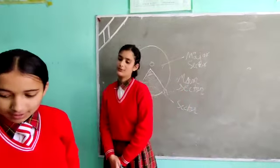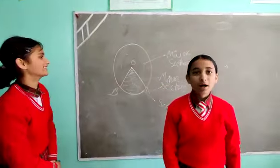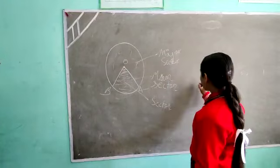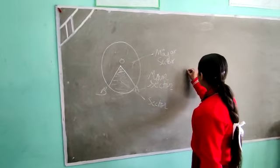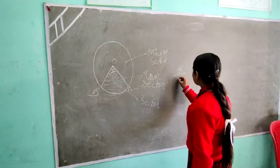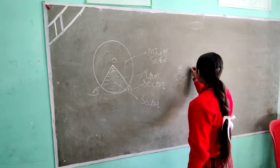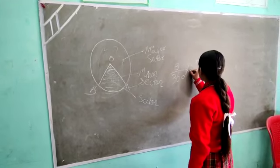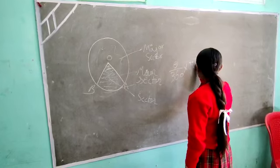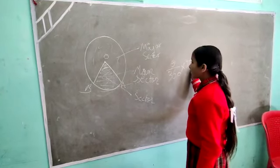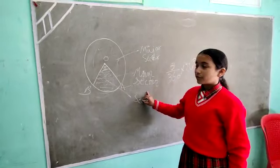Now, we will learn to find the area. So our formula is theta upon 360 multiply pi r square. This is the formula to find the area of sector.